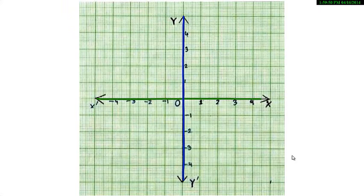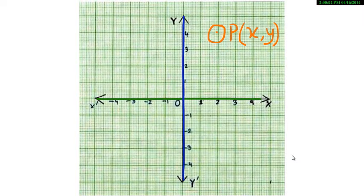Look at this picture. The x-axis and y-axis have been plotted for you. Are the two axes set at right angles to each other? An ordered pair is the two numbers written in a particular order needed to give the position of a point in the Cartesian coordinate system.